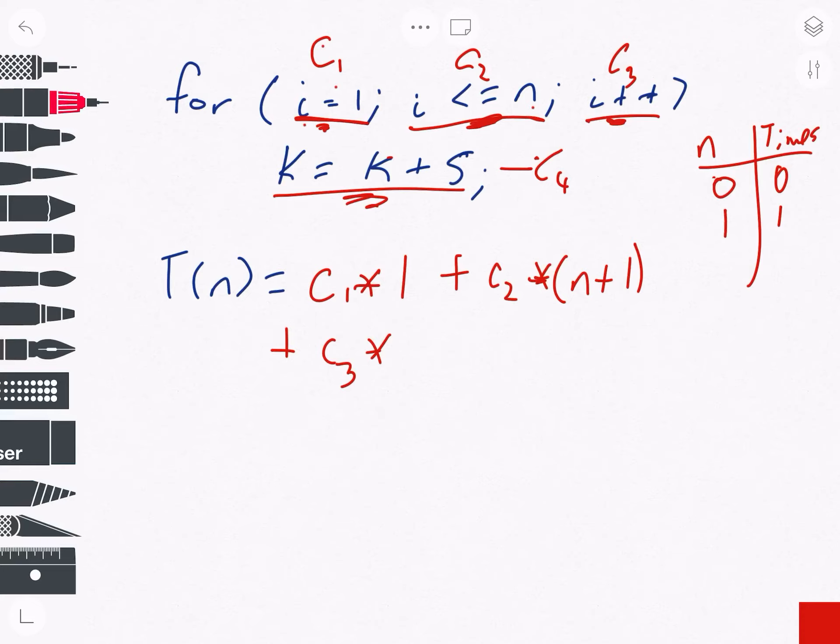If n was two, we do the check once, we do the i plus plus once, we do the check twice, we do the i plus plus twice, we do the check a third time—it's now false and we pop out. So we do it two times. Do you see the trend here?